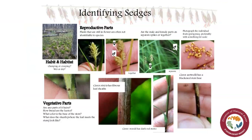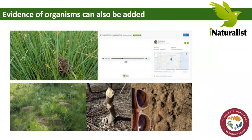One good example of organisms that can be tricky to identify are sedges. For sedges, you need to record a lot of different things — not just the leaves, stems, flowering parts, and seeds, but you may also need to take a picture of the habitat. Sedges are notorious for being really difficult to ID, but there are experts on iNaturalist who, if you have enough characteristics, might be able to identify it. You can also include evidence of organisms: coyote scat, ant mounds, a tree eaten by a beaver, or tracks — evidence of organisms even if you don't see them themselves can also be recorded.